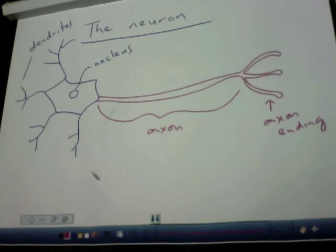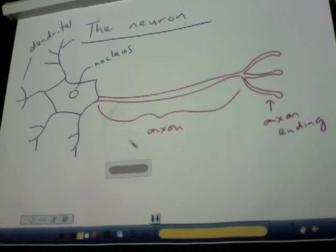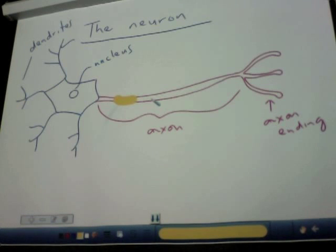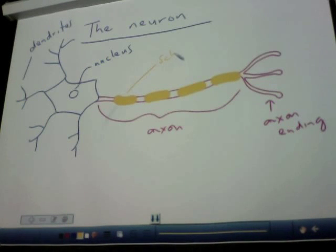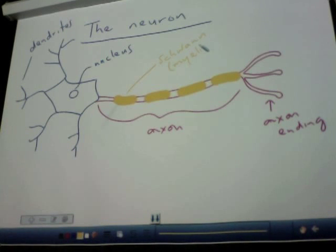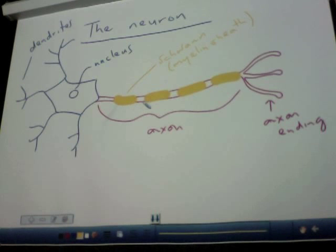The axon is actually covered with a certain type of cell called Schwann cells. Schwann cells are interesting because they're individual cells that wrap around the axon, and they help insulate it, much like the plastic coating on a wire or on your earphones. People who have a problem with what's called their myelin sheath, which is made up by the Schwann cells, can get Parkinson's disease, and there are other diseases caused by demyelination — the myelin sheath breaking down. So Schwann cells do a really important job.